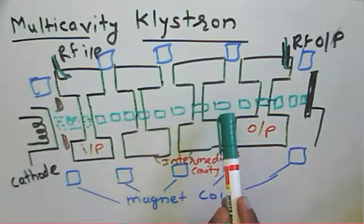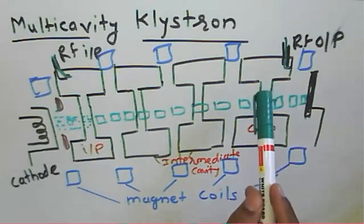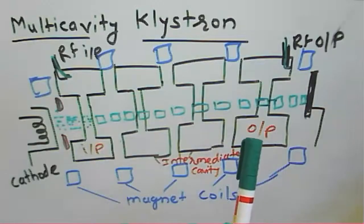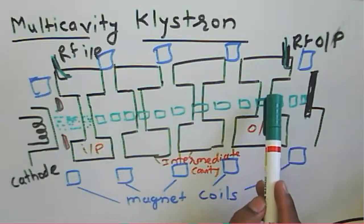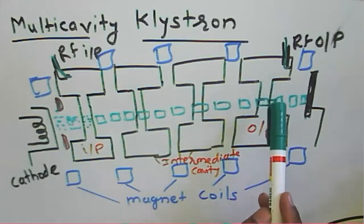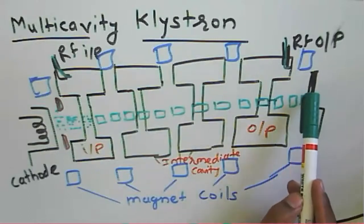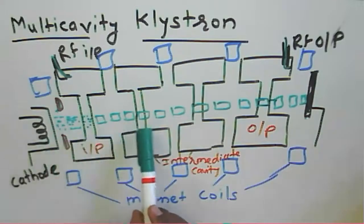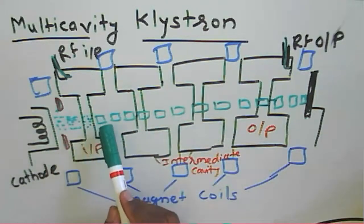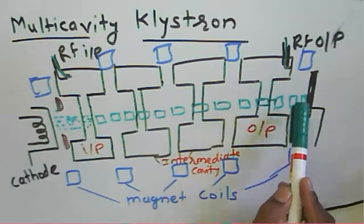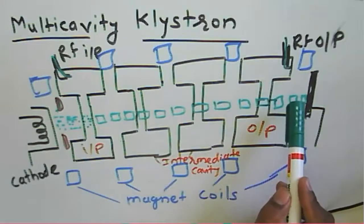The bunches propagate through the intermediate cavities, giving up their energy to each cavity. Then they reach the catcher cavity, where the electron bunches give up their energy, causing the RF output to be amplified. Finally, the electrons, having released their energy, slow down and move toward the collector through the catcher cavity.